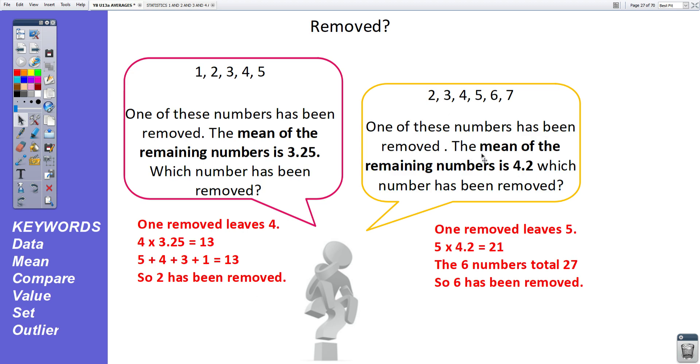This one's slightly tougher. One of these numbers has been removed. The mean of the remaining numbers is 4.2. Which number has been removed? If you remove one number, it leaves 5. And 5 times 4.2 equals 21. Now the six numbers originally totaled 27. They now totaled 21. So the number six has been removed. This is the second way of doing it. Find what the original set of numbers added up to. Find what they add up to now that one's been removed. And that will tell you the number that's been removed.